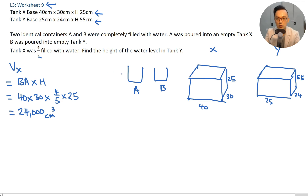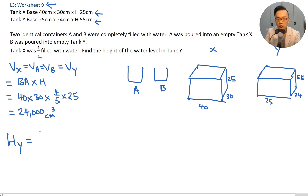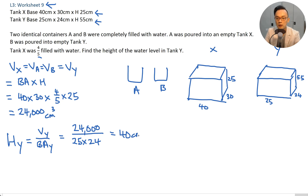Since A and B are identical containers, volume of X equals volume of A equals volume of B equals volume of Y. So to find the height of Y, take volume of Y divided by base area of Y, which is 24,000 divided by 25 times 24, giving 40 cm.